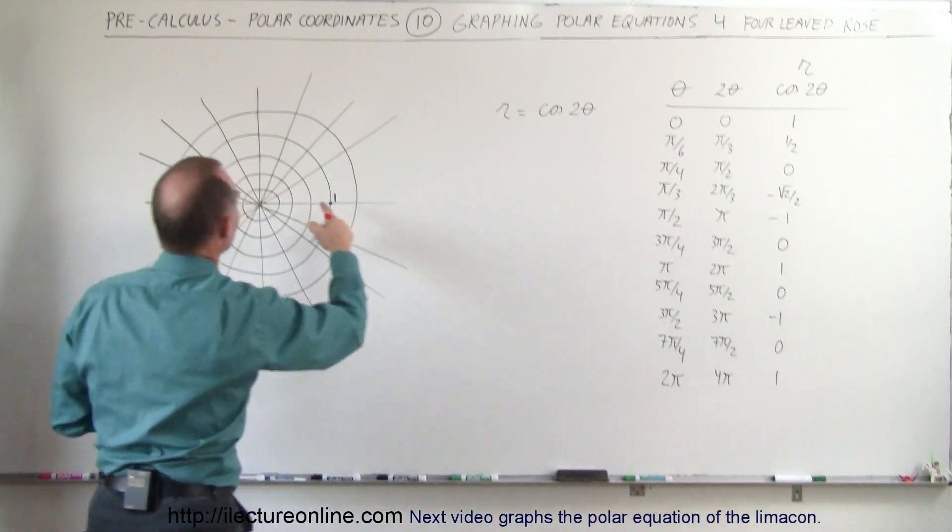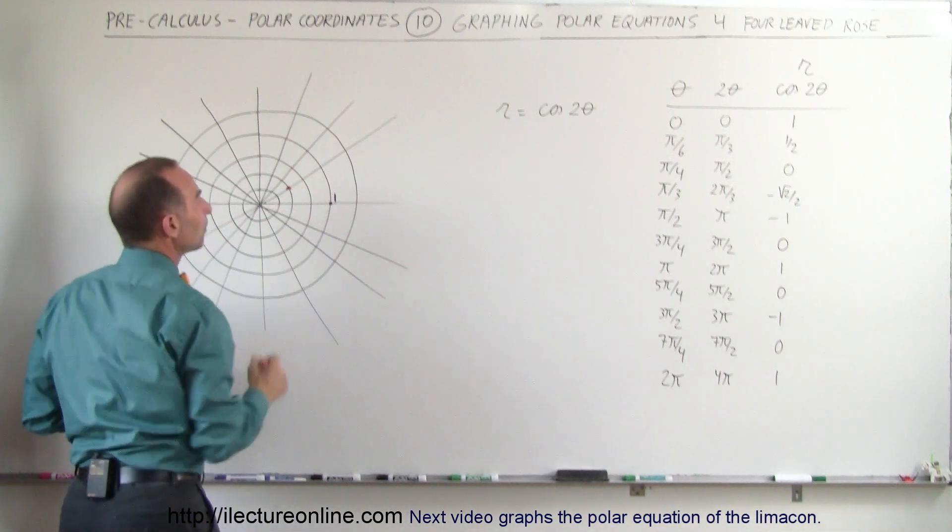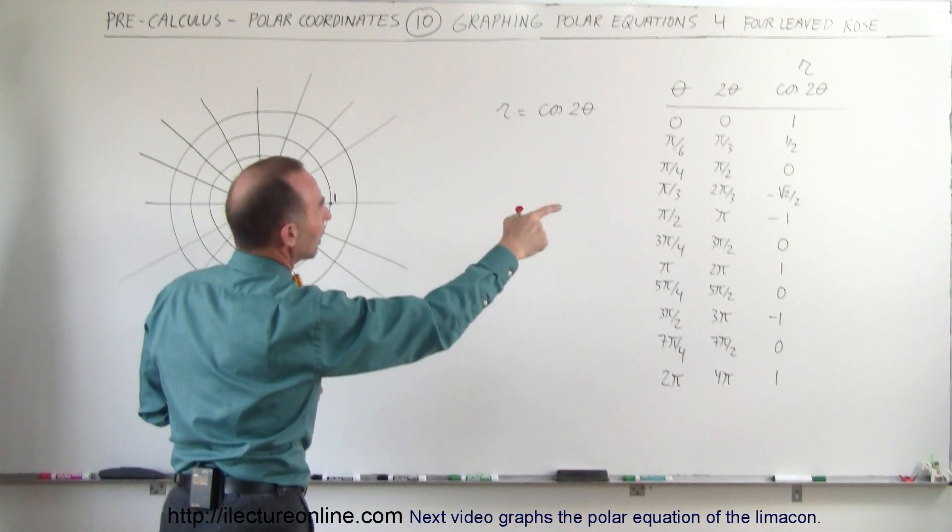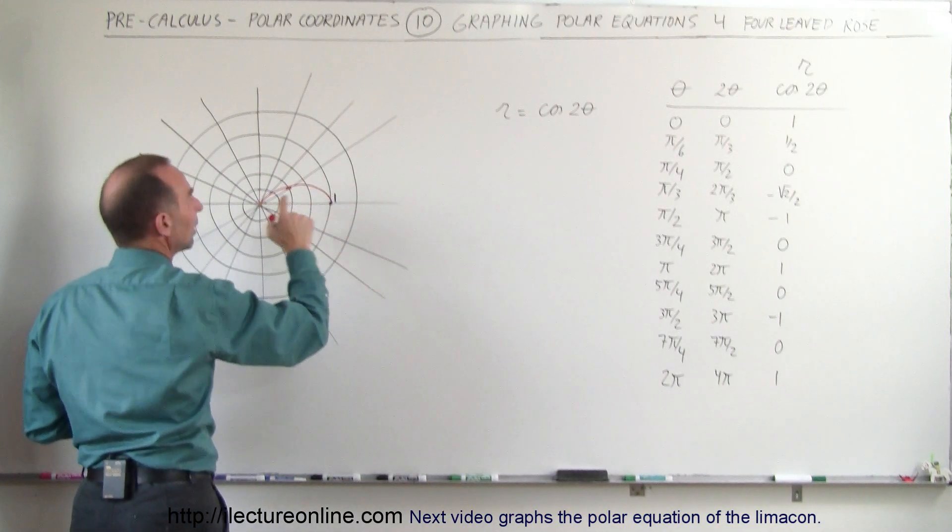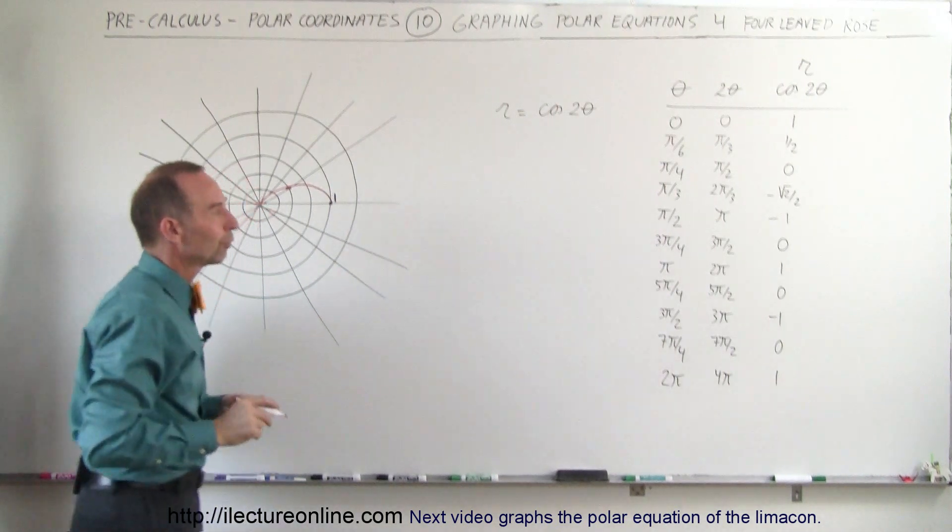Second dot at pi over 6, it's equal to 1 half, that would be right over there. At pi over 4 that will be 0. So notice that we start from here and it goes right over here. That's just going from 0 to pi over 4.